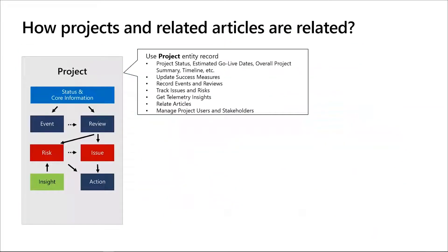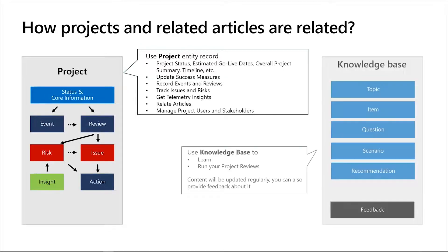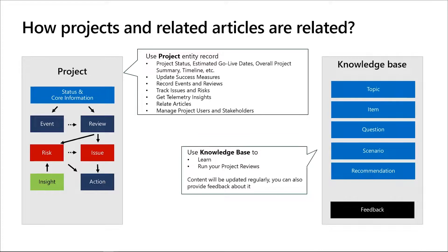We have explained how the projects are maintained and how the knowledge articles will provide important learning capabilities. Now let's explore how these two core elements are related to each other. Projects will be a container of different transactions that happen during the implementation timeline. These project transactions can be events and reviews. On the initial version, we have limited capabilities on the review experience, but that will change soon.